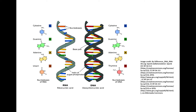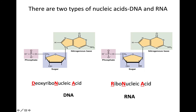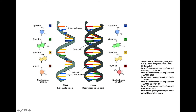DNA and RNA are made by connecting nucleotides to each other end over end. Just like we make polymers in carbohydrates and proteins, when these polynucleotides are made, they are connected end to end via covalent bonds.